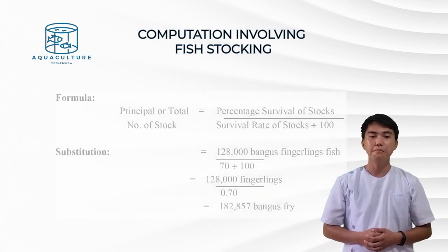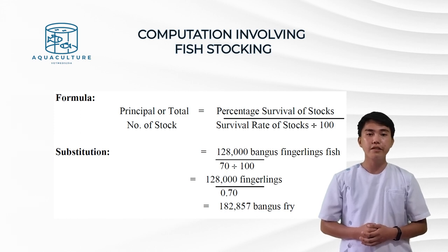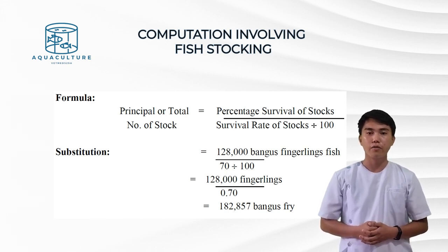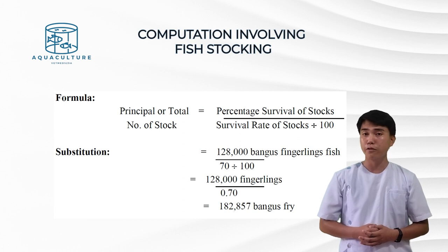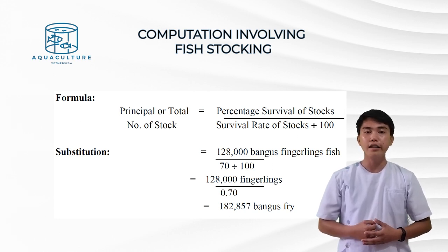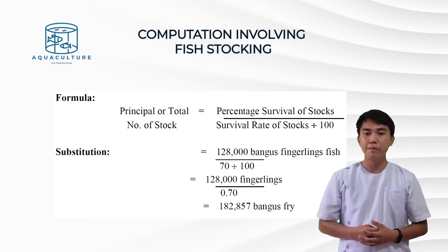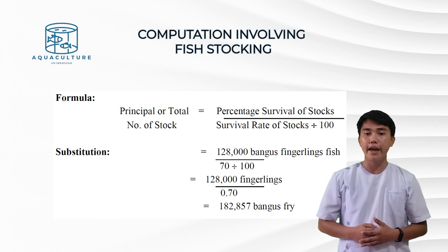The formula for the principal or total number of stocks is: principal = percentage survival of stocks divided by survival rate of stocks over 100. Substituting: 128,000 bangus fingerlings over 70 divided by 100, which equals 128,000 over 0.70. The result is 182,857 bangus fry.